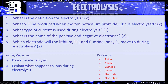Let's have a look at a couple of questions. Question one: what is the definition for electrolysis? It's worth two marks. Question two: what will be produced when molten potassium bromide, KBr, is electrolysed? Think about what potassium bromide is made out of, and state the two elements that will be produced — you don't need to name the electrodes.